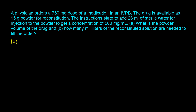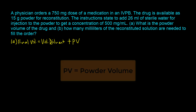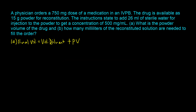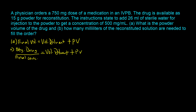In part A, the question is asking for powder volume. We can start with the equation: final volume equals volume of diluent plus powder volume (PV). From the question, the volume of diluent is 26 milliliters. However, the final volume is not given explicitly. So we address that by using the understanding that final volume is also given by the quantity of drug divided by final concentration. So we can set this ratio equal to the volume of diluent plus the powder volume PV.